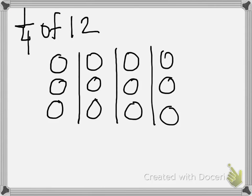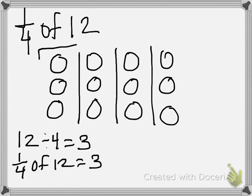Each fourth has 3 counters placed in it. So we can see that 12 divided by 4 is equal to 3. Therefore, 1/4 of 12 is equal to 3, because 1 group of the 12 counters is 3 counters.